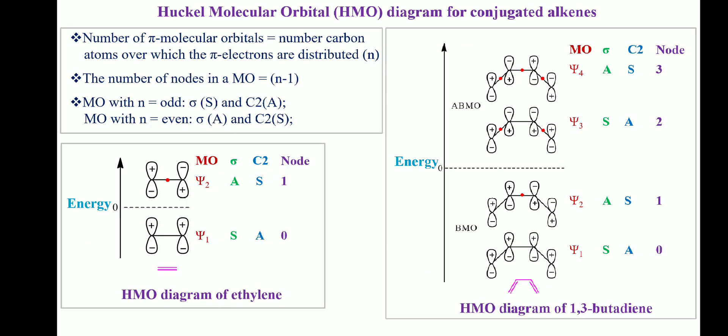Huckel molecular orbitals of ethylene and any conjugated alkene can be constructed if we remember these three points. First, the number of pi molecular orbitals equals the number of carbon atoms over which the pi electrons are distributed. Second, the number of nodes in a molecular orbital equals n−1, where red dots represent nodes. Third, molecular orbitals with n equal to odd have a plane of symmetry and no C2 axis, while those with n equal to even have a C2 axis of symmetry and no plane of symmetry.